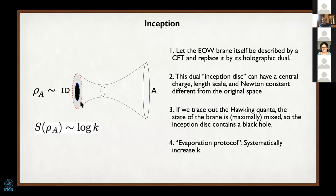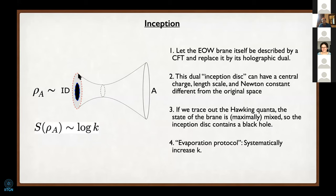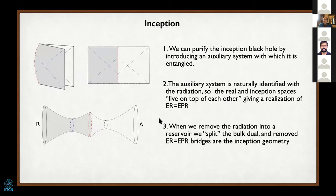Now I'm going to purify this black hole by introducing an auxiliary system. Here's the original BTZ; here's the end-of-world brane; the dual of the end-of-world brane is a BTZ black hole, purified by having another asymptotic region. In some sense this auxiliary system is the radiation—this inception part of the geometry lives on top of the original geometry, and this other asymptotic inception boundary is really the radiation boundary. This is a pictorial realization of the ER equals EPR philosophy.